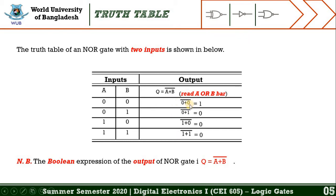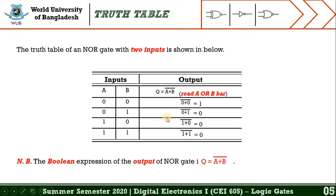The Boolean expression of the output of the NOR gate is (A OR B) bar. If both inputs are zero, then the output is one. If both inputs are one, then the output is zero.